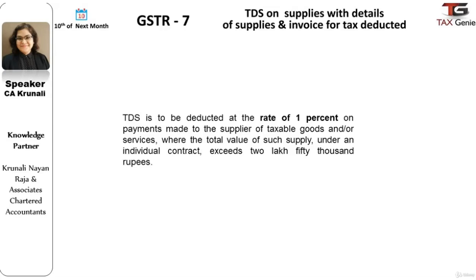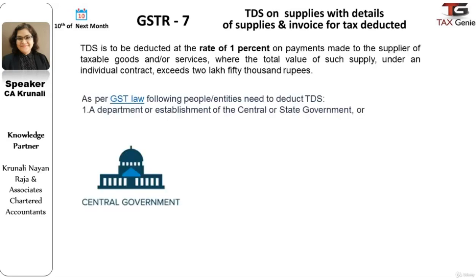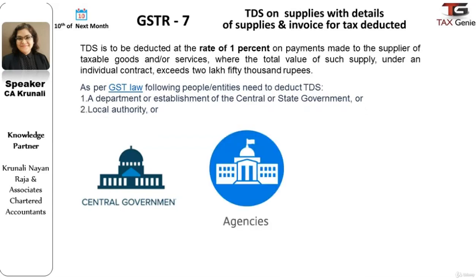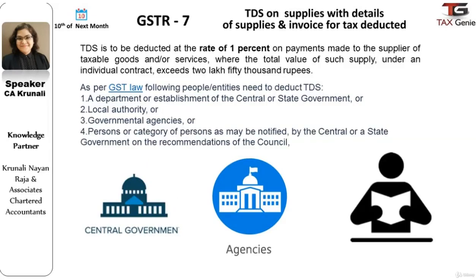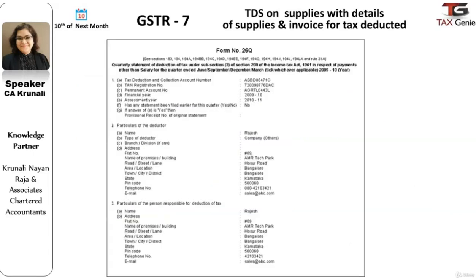TDS is to be deducted at the rate of 1% on payments made to the supplier of taxable goods or services where the total value of such supply under an individual contract exceeds Rs. 2,50,000. People like local authorities, government agencies, or a departmental establishment of the central or state government are liable to deduct TDS. The return form for TDS is almost similar to the TDS return of the Income Tax Act, that is Form 26Q and 24Q.